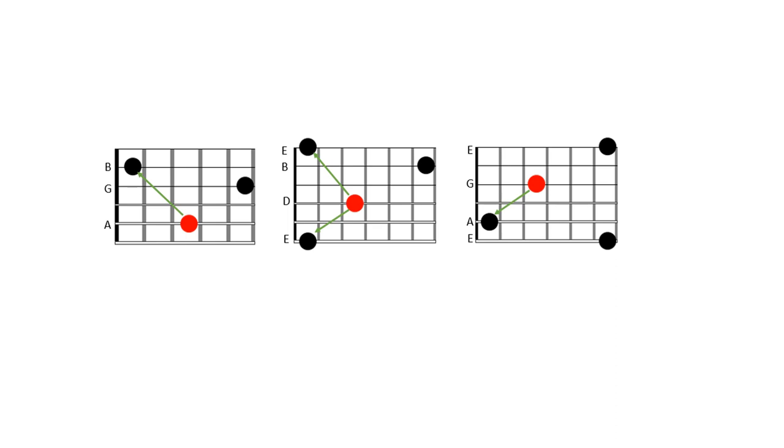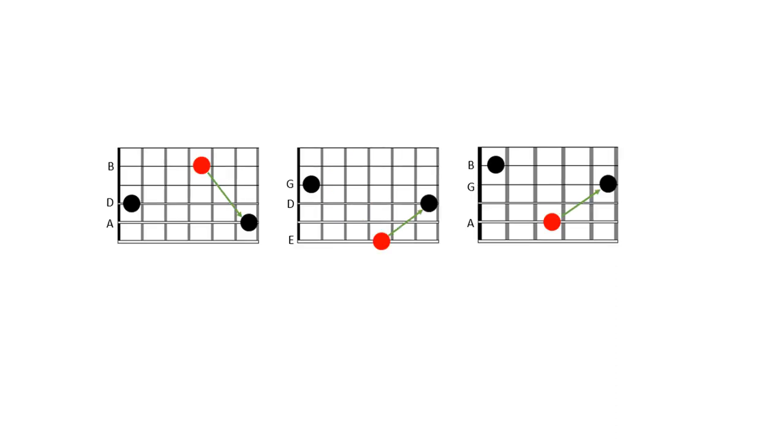For example, when ascending in seconds from the A to B, D to E, or G to A strings, the identical root is two frets lower. On the other hand, when descending in seconds from the B to A, E to D, or A to G strings, the identical root is two frets higher.